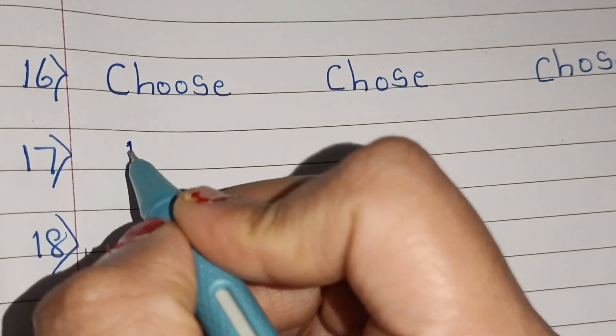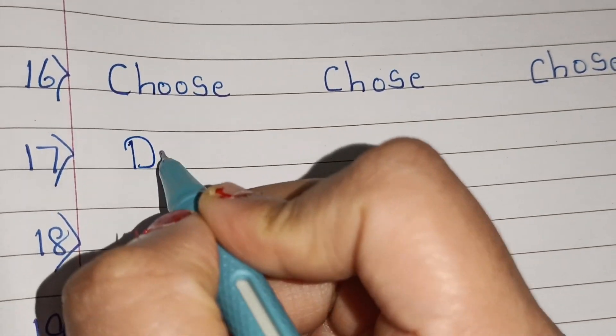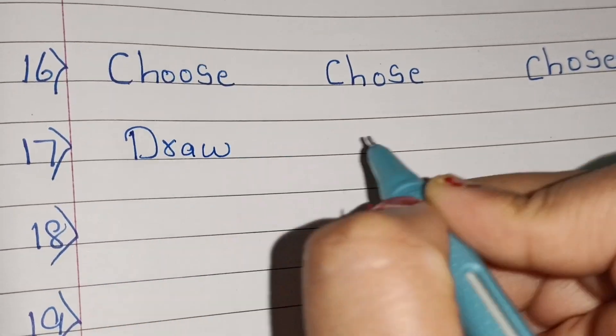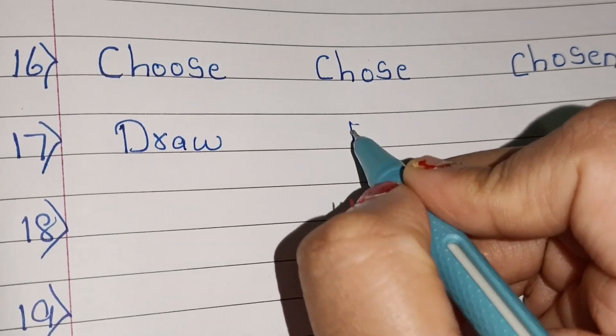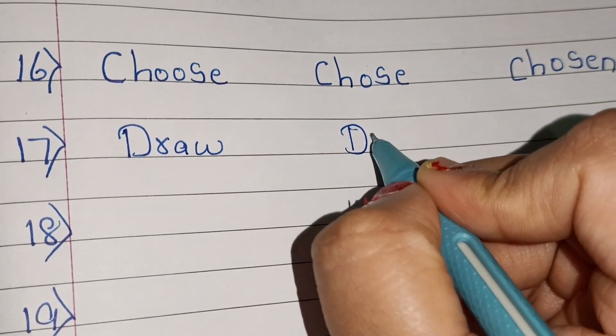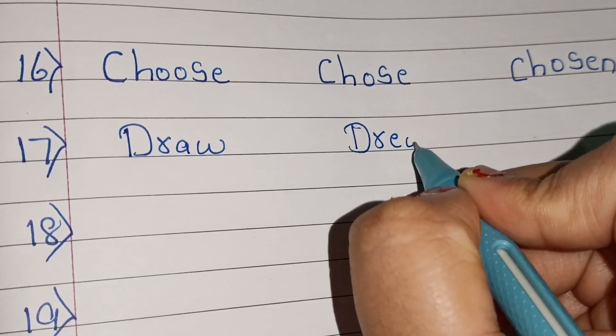Seventeenth: draw — verb 1; drew — verb 2; drawn — verb 3.